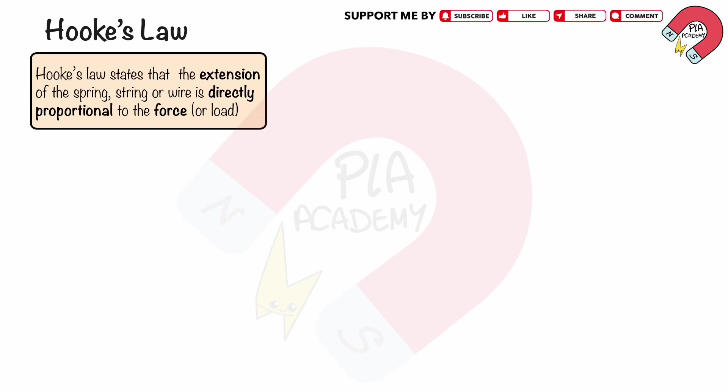Hooke's law states that the extension of the spring, string or wire is directly proportional to the applied force, or load. We can write the equation as F equals KX, where F is force in newtons, K is the spring constant of stiffness in newtons per meter, and X is the extension or compression in meters.